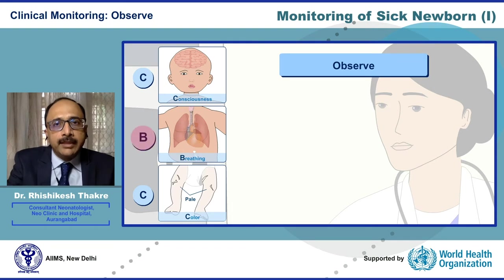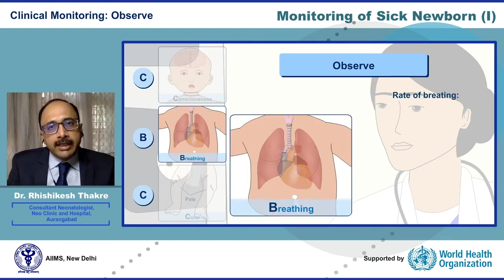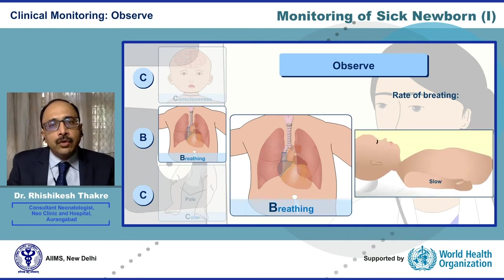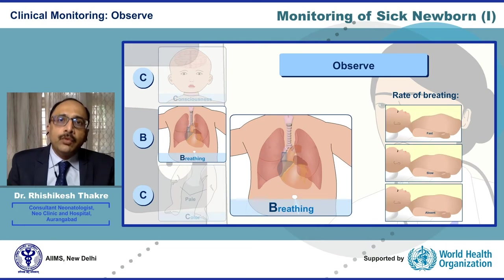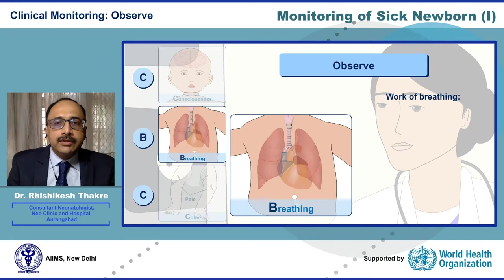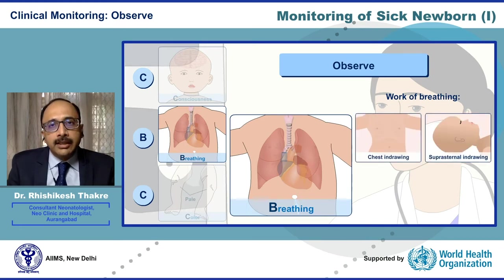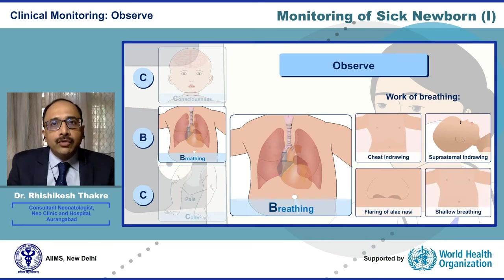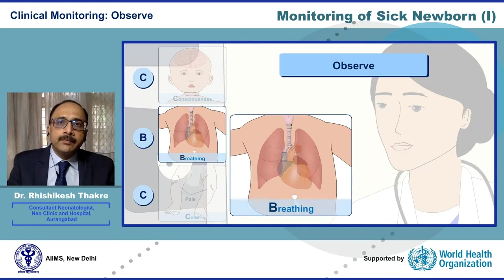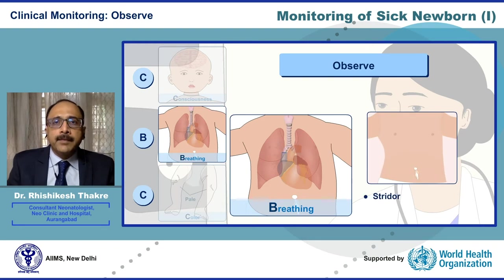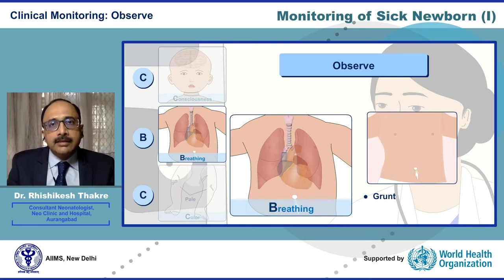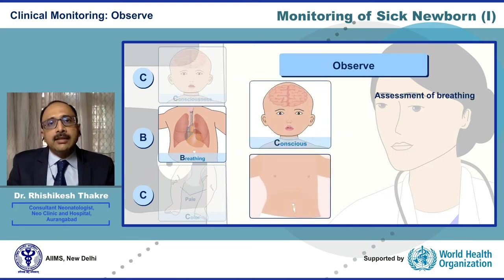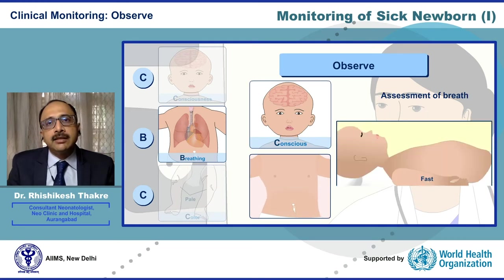The observation of B, that is Breathing, takes into consideration: what is the rate of breathing — is it fast, slow, or absent? We also need to note the work of breathing. Presence of chest in-drawing, suprasternal in-drawing, flaring of alae nasi, or shallow respiration is abnormal and tells us there is increased work of breathing. Note for any audible sounds — a stridor is suggestive of upper airway obstruction, and a grunt suggests alveolar pathology.